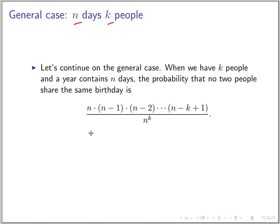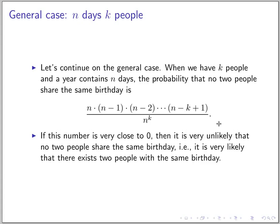So we get these general terms, which can be derived similarly. If this number is close to 0, we can say that the probability that everyone has different birthdays is getting close to 0. So it's very likely that you find someone with the same birthday.